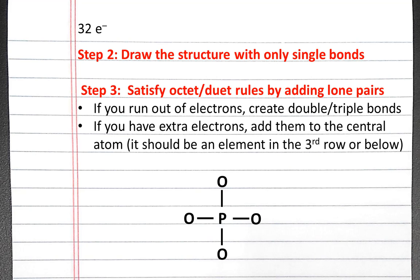The third step is to satisfy the octet and duet rules by adding lone pairs. First, we'll satisfy the octet rule for peripheral atoms, and if we run out of electrons, we'll create double and triple bonds.